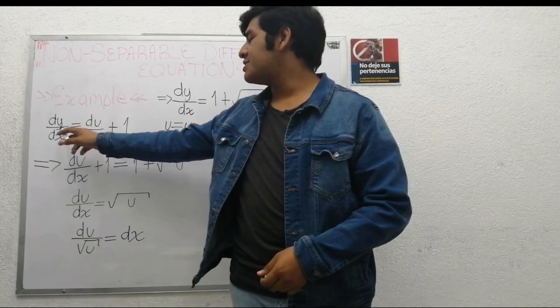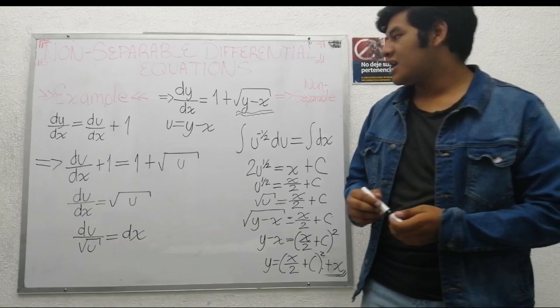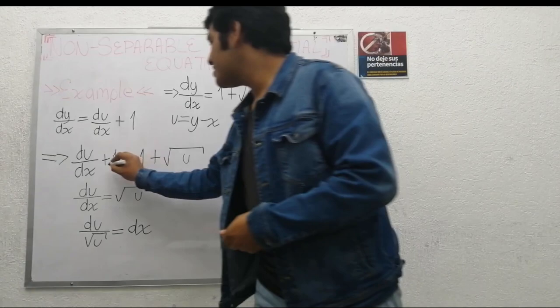dy over dx equals du over dx plus 1. Having the variable change and the term dy over dx, we can substitute into the original equation. And thus we have this. We observe that the ones on both sides cancel, and we have this.